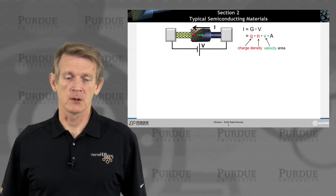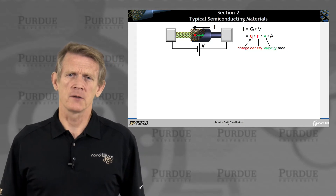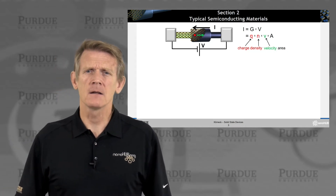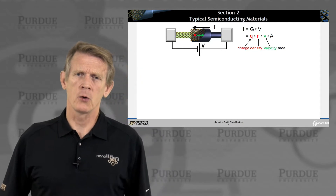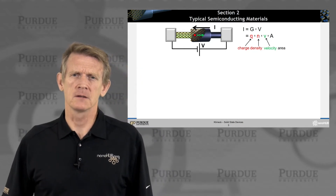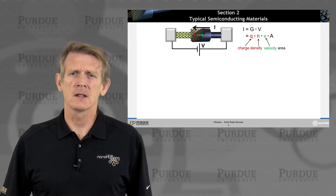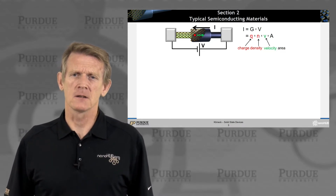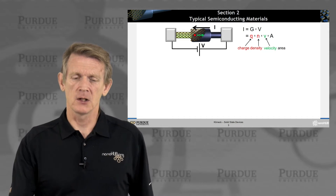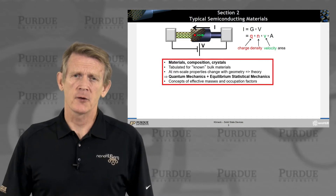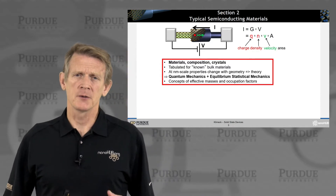Let me go into the first segment and remind you that we're after current flow. That is typically our goal in this whole course — to understand current flow in solid-state devices. We need to get after charge densities and velocity of the charges in realistic devices, and for that we need to look at materials and their composition.